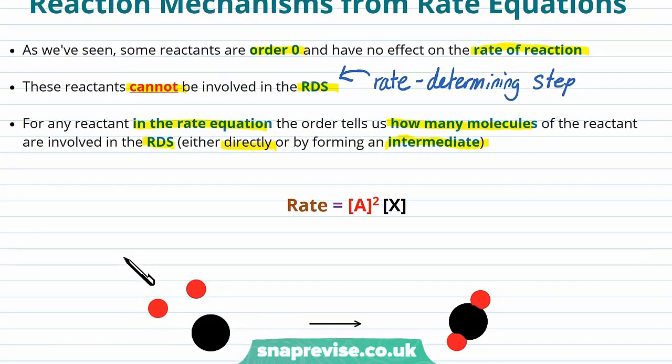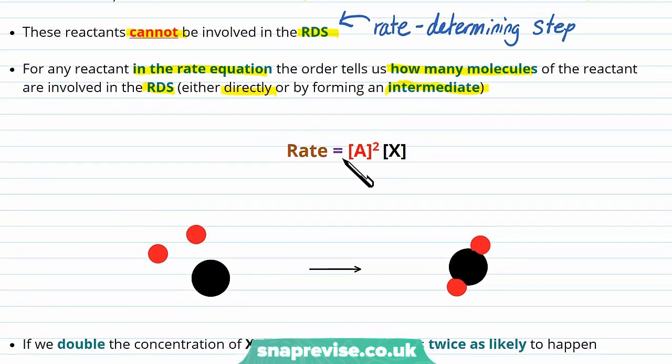As an example for this, let's think about the rate equation. The rate of some reaction is equal to the rate constant times by the concentration of A squared times by the concentration of X. So A is second order and X is first order. If we look at a potential mechanism for this reaction, how many molecules of the reactant involved in the rate determining step is usually equal to the order of those reactants. X is order one, so there'll be one molecule involved. And A is order two, so there'll be two molecules involved.